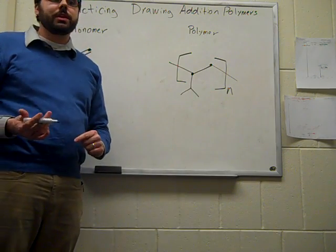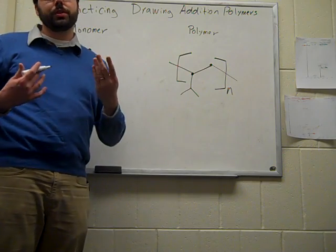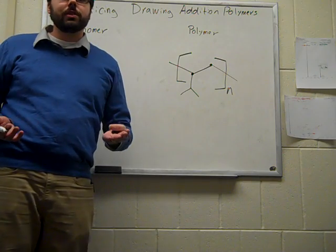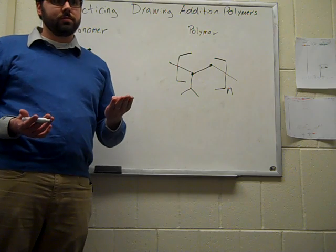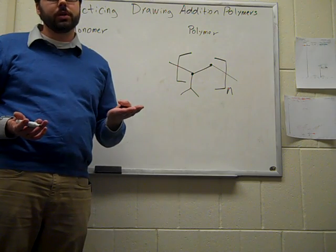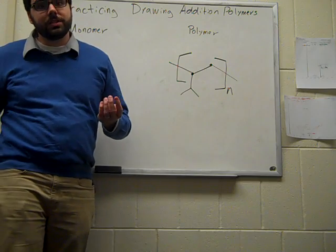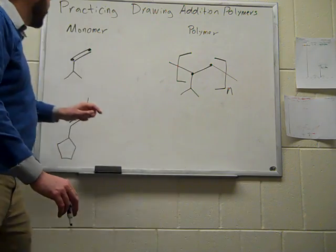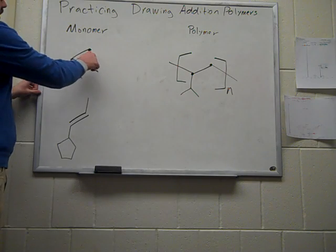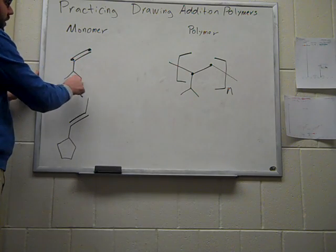And so, an important check that you can do to ensure that you've done this correctly is to take a look at your molecular formula of both your monomer and your repeating unit of a polymer. In the case of an addition polymer, both of these will wind up being the same. So, in this case, our monomer has 1, 2, 3, 4, 5 carbons,